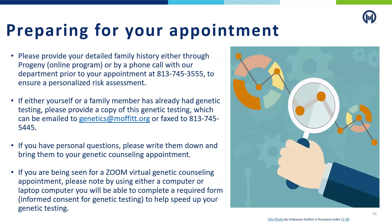In preparing for your appointment, it is very helpful for us to get your family history beforehand to ensure a personalized risk assessment. We understand that sometimes information is limited and whatever you are able to share is helpful. You may be emailed a questionnaire through an online program called Progeny to enter this information, or be called by our department prior to your appointment. We are most interested in learning about who in the family has developed a cancer diagnosis, what kind of cancer, and an estimated age of diagnosis. You can reach us at 813-745-3555 to review this information.